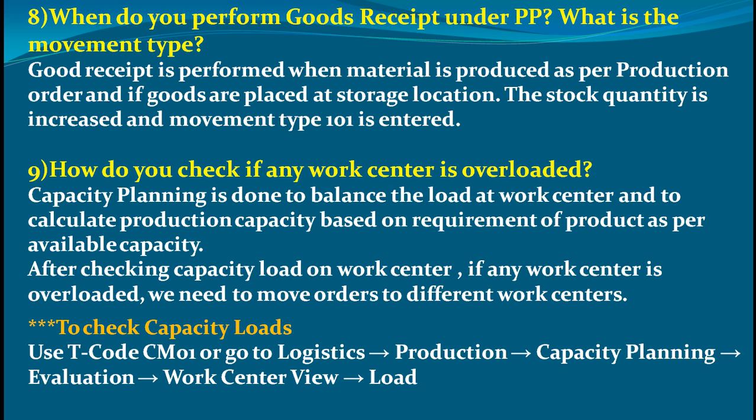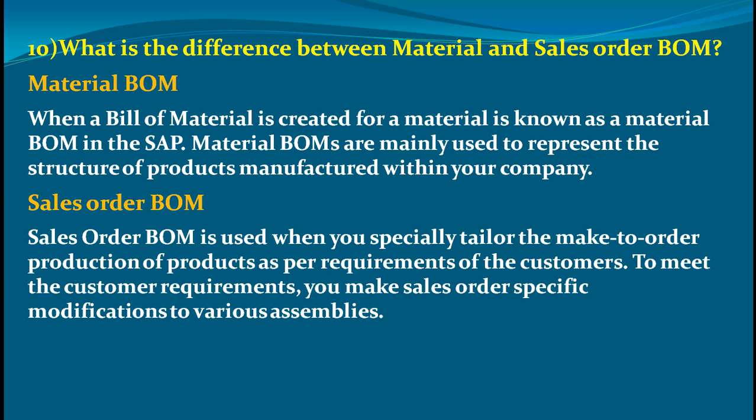How do you check if any work center is overloaded? Capacity planning is done to balance the load at the work center and to calculate production capacity based on the requirement of a product as per available capacity. For example, if a warehouse can only fit 500 units, production is planned accordingly. If any work center is overloaded, orders are moved to a different work center. To check the load, you use T-code CM01 or navigate to Logistics > Production > Capacity Planning > Evaluation > Work Center, and check the load details.